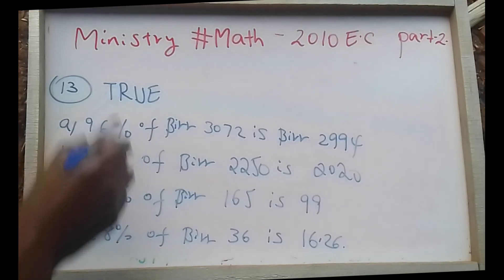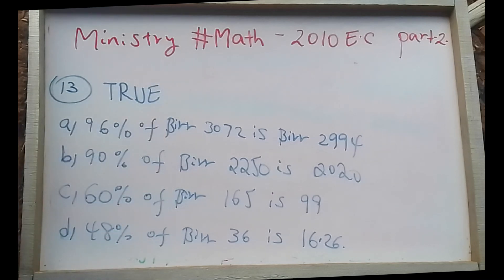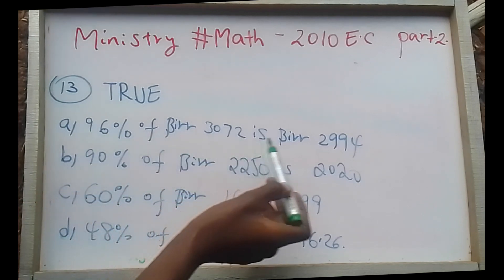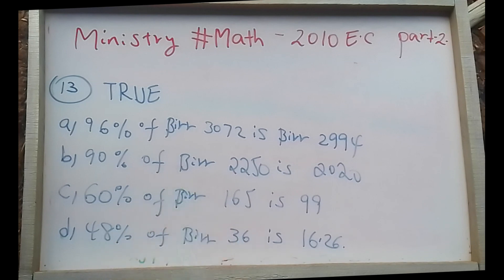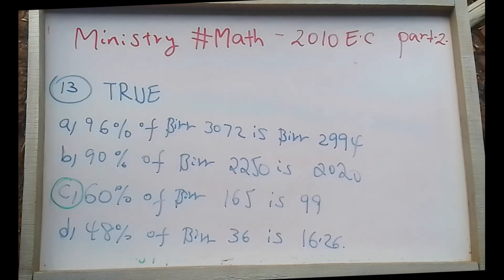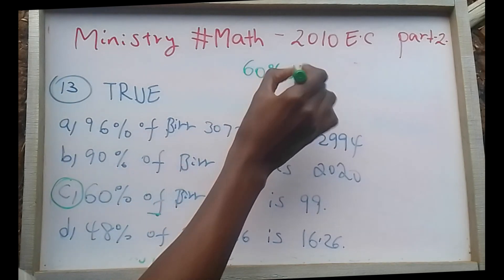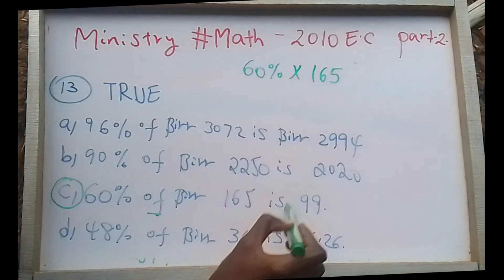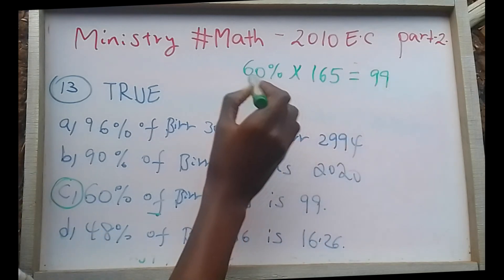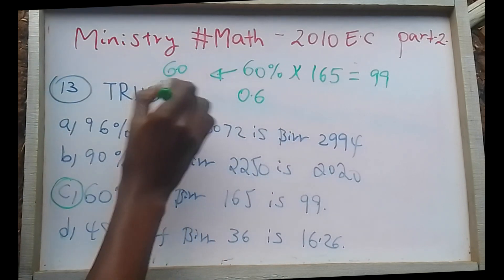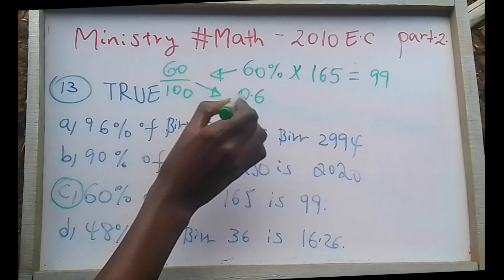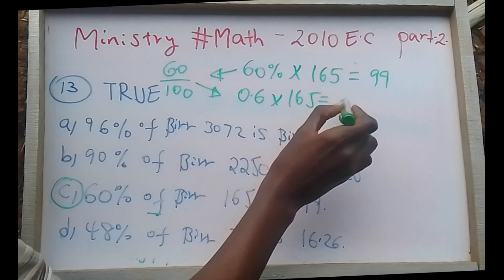Now the concept: 60% of the bird — 165 feet — is 99 feet. Because 60% equals 60 over 100, which is 0.6. So 0.6 times 165 feet equals 99 feet.